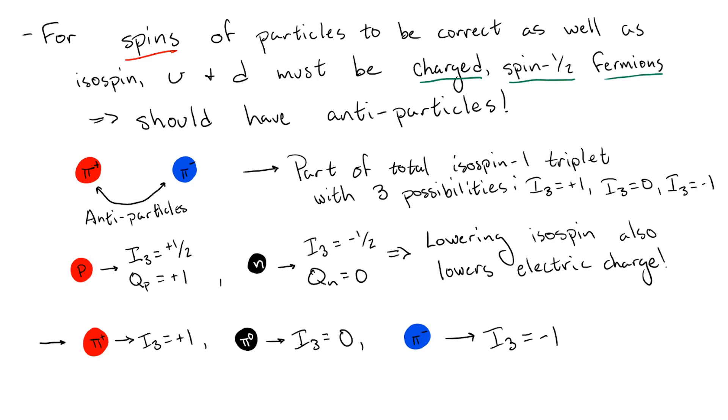From this, we can see that when we take the antiparticle, such as going from the pi plus to the pi minus, we also negate the isospin. This also works for the pi zero, where flipping the sign of the isospin, zero in this case, has no effect. This is exactly what we would expect since the pi zero is its own antiparticle.